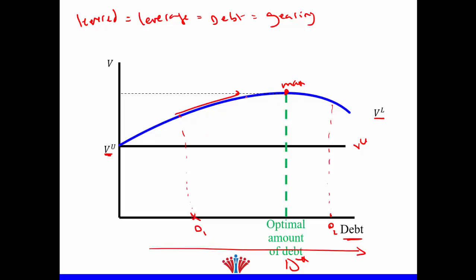The next point to explain is why, when we increase debt, the levered firm value first increases and then decreases. There are two forces at play. First, every time a firm uses debt it must pay interest on that debt. We subtract interest in the income statement: EBIT minus interest gives earnings before tax, minus taxes gives net income. So the more debt we use, the more interest we pay, and the less we pay in taxes.